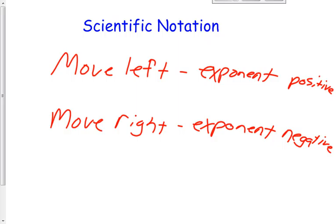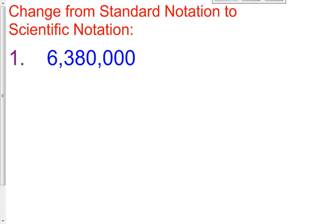Let's explain that a little bit further using problems 1 through 5 on scientific notation. For problem number 1, we're going to change it from standard notation — it's 6,380,000 — to scientific notation. The decimal point is right here, and we're going to make this into a power of 10 using the scientific notation method.